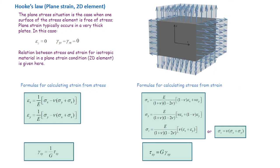The other special case is when strain in one of those directions is equal to zero, which again simplifies the equations. This is called the plane strain situation, and it occurs where the thickness is unlimited — when we have a very long thickness.